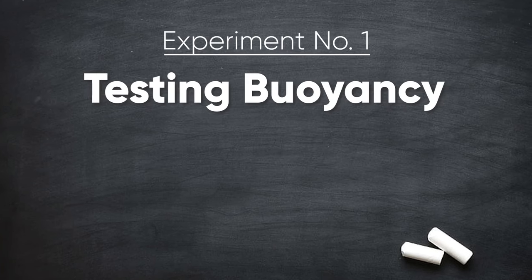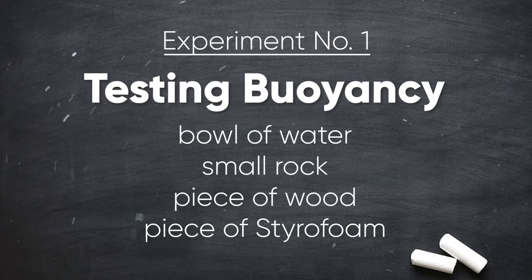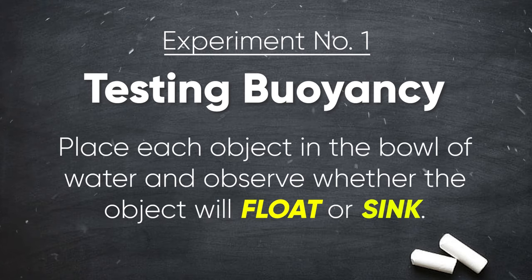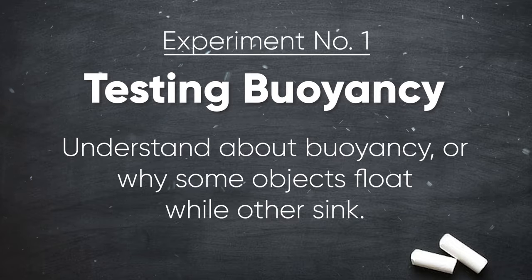Experiment 1. Testing buoyancy. What you'll need. A bowl of water, a rock, a piece of wood, and a small piece of styrofoam. What to do. Place each object in the bowl of water and observe whether it floats or sinks. What you'll learn. This will help you understand buoyancy, why some objects float while others sink.